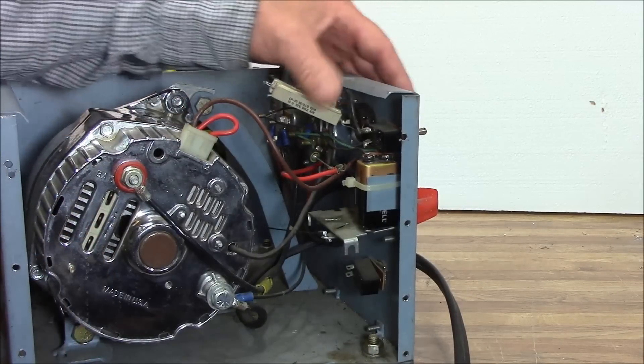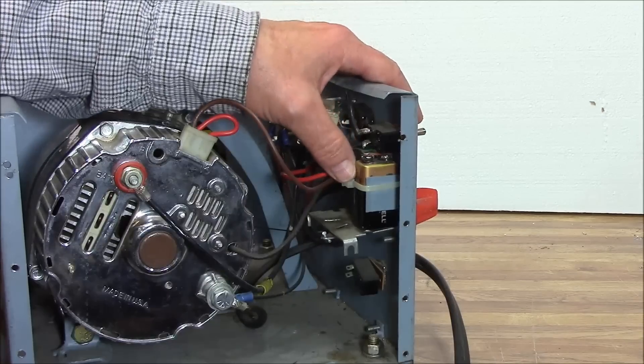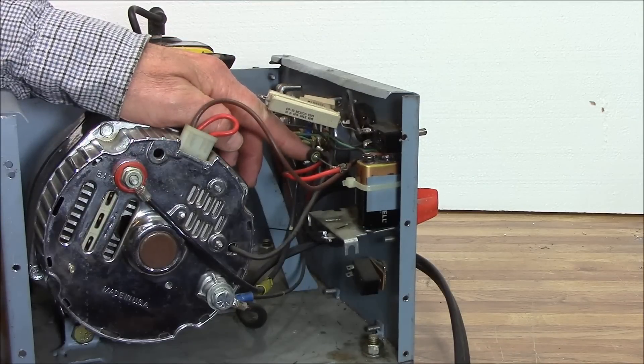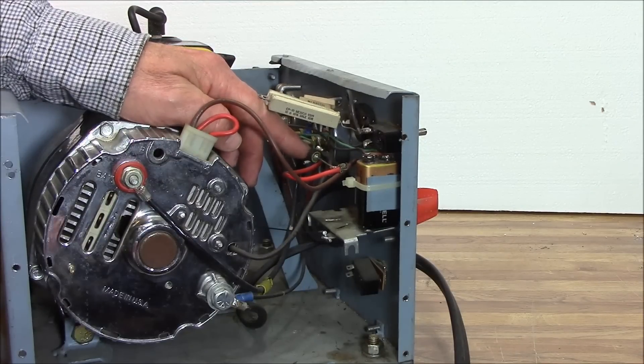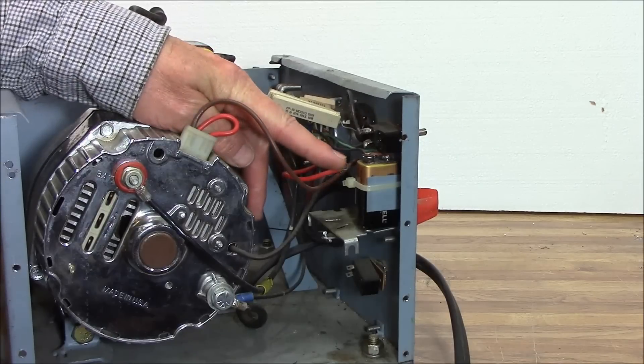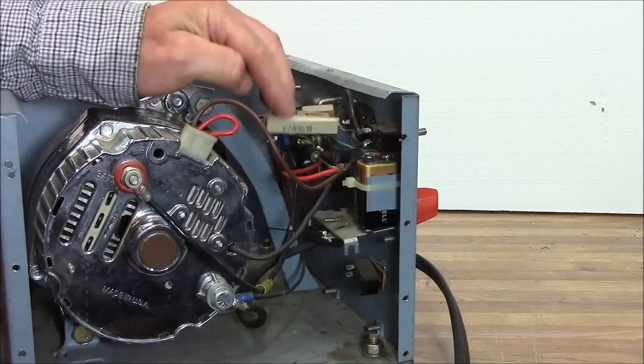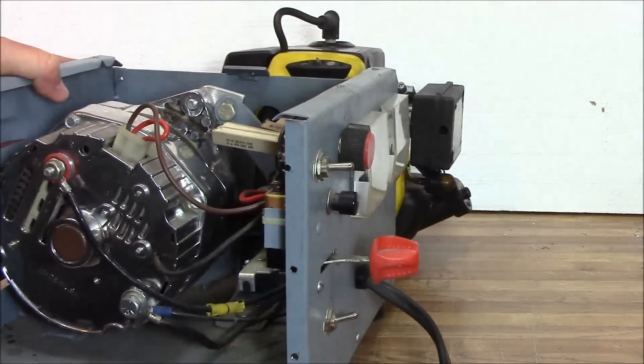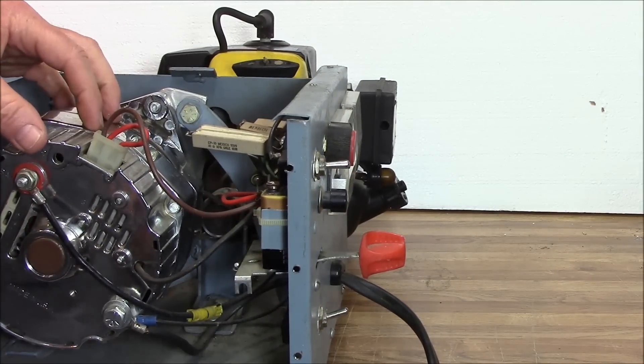I use this little nine volt battery to activate the alternator, but you got to have a diode in here because you want the power to come out and start the alternator, but you don't want the power to flow back into this little nine volt battery. That's what the diode does. That's how I set up this wiring.